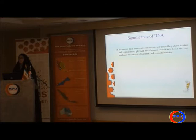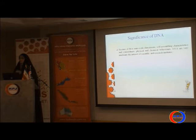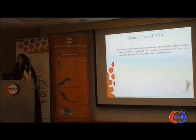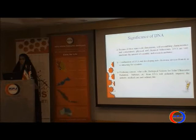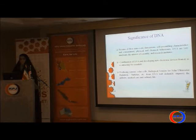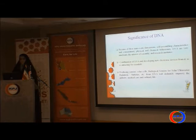Self-assembling materials means that if a section of the DNA is damaged or has some problem, it can repair itself. It means that in this chip, after a problem occurs in one section, it can be repaired — and this is a useful property for nanoelectronic devices. The combination of DNA and developing new electronic devices from it is very attractive for scientists, producing sensors, solar cells, biological sensors, new batteries, and so on. DNA will definitely improve industry, medical care, and ordinary life. This DNA is used in biology, bio-electronics, and engineering.